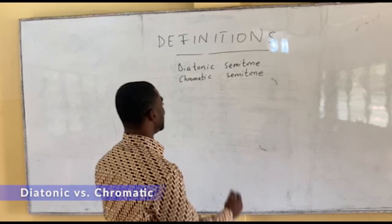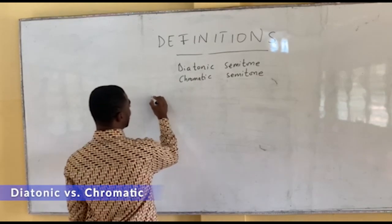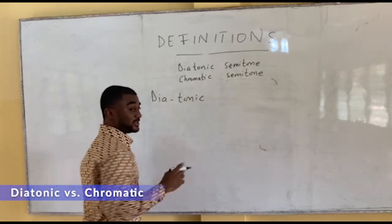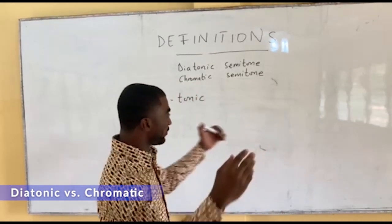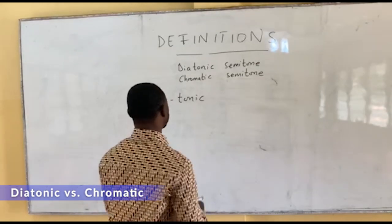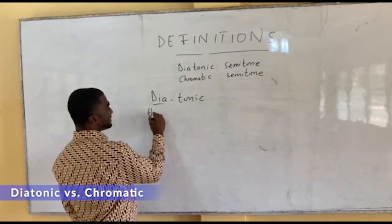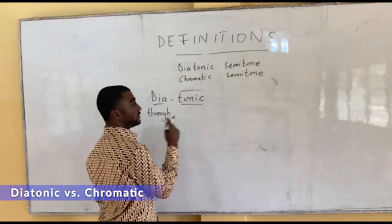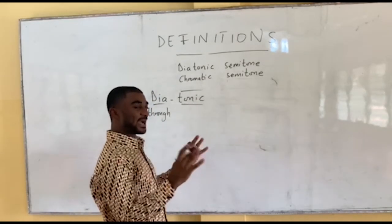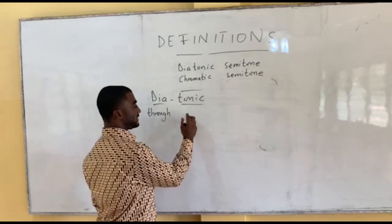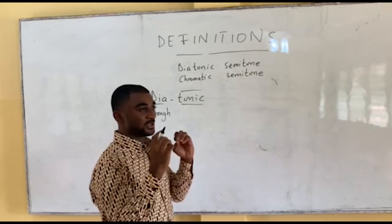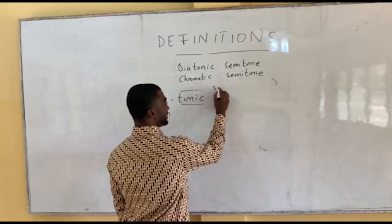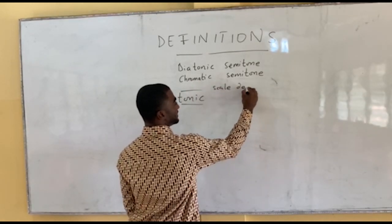Let's talk about the diatonic. But before that, let's understand what the word diatonic itself means as a way to appreciate the scope of what it entails. 'Dia' is Latin, which means 'through,' and diatonic, in this sense, is sort of the guiding note. We'll come to that in a minute when we speak about the functional names of the scale degrees. Remember that phrase: scale degrees.